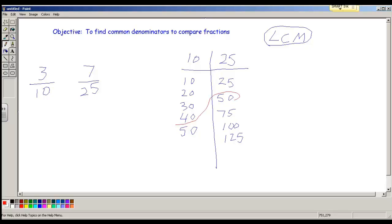Awesome. If I didn't find common numbers, I would have to keep on going. I'd have to keep on going with my multiples until I found one. But I found 50. So I'm going to write that over here. My denominator is now 50 for both of these fractions. 50 and 50.